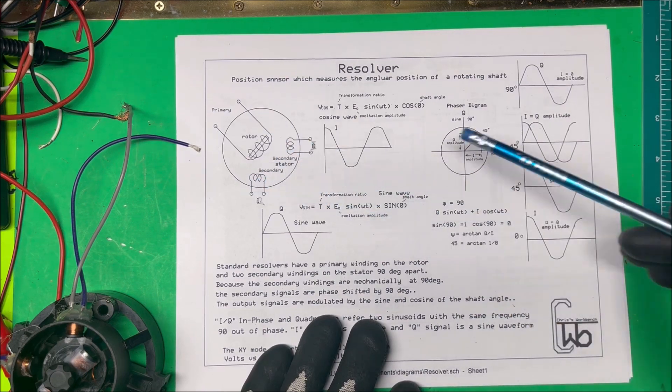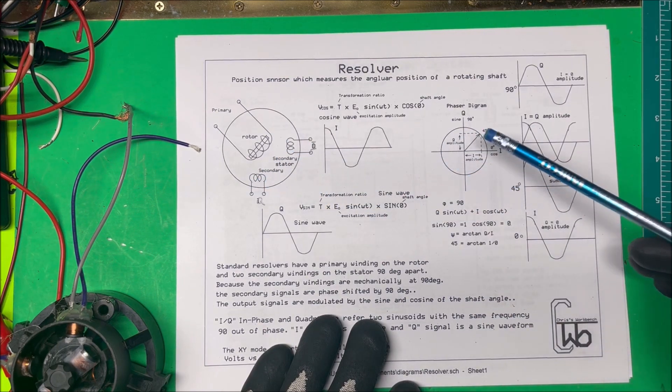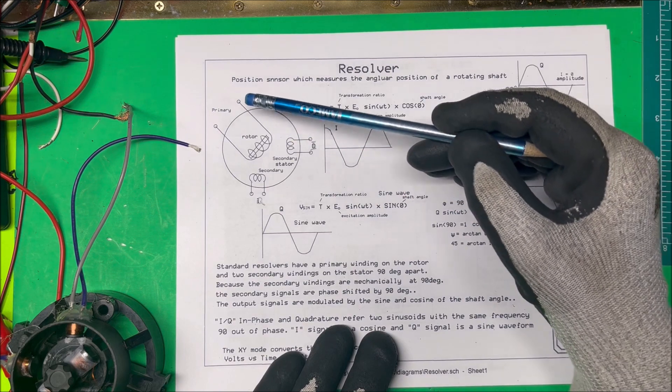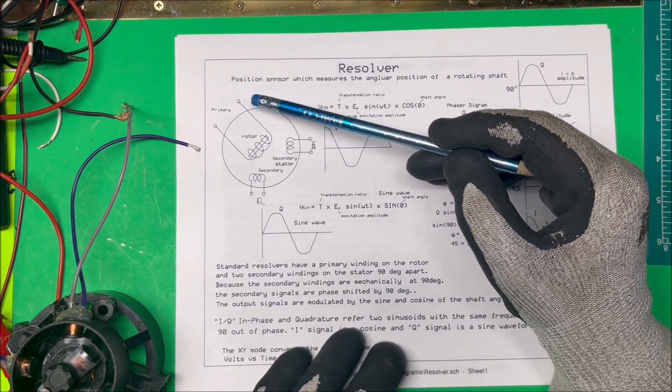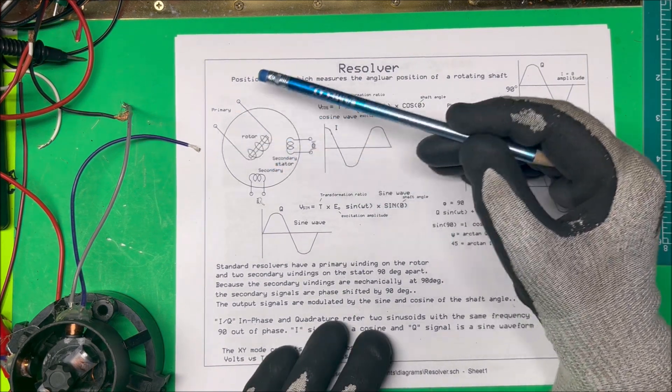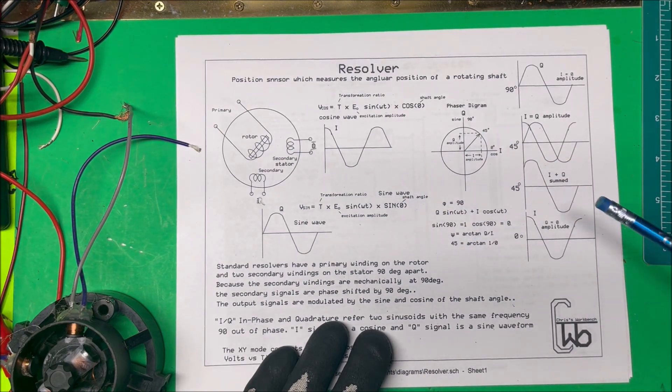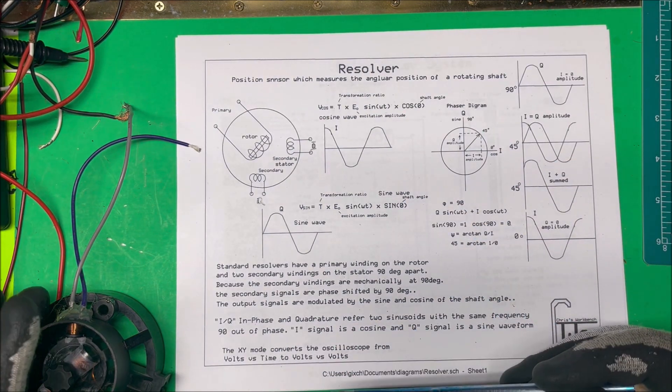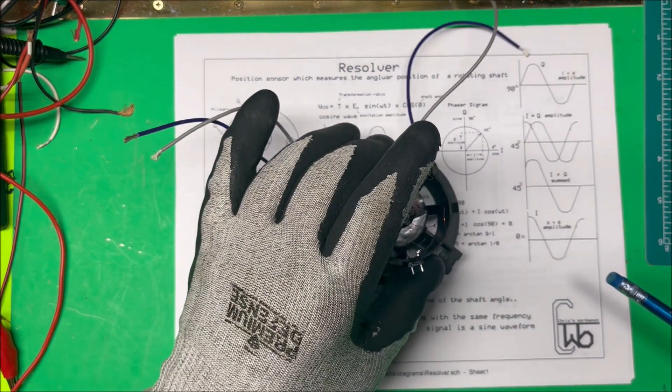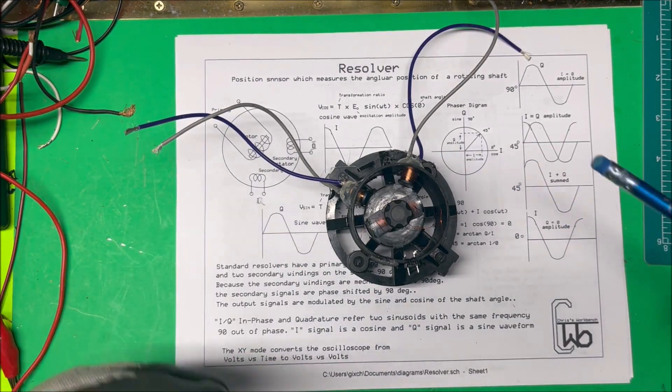So with this setup here, we can do about 180 degree turn. Now on normal ones, they'll have two more coils back here so we can go 360 degrees. Now I made this one up and it just has two coils on there.